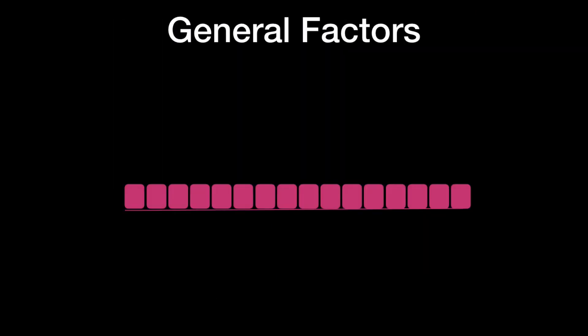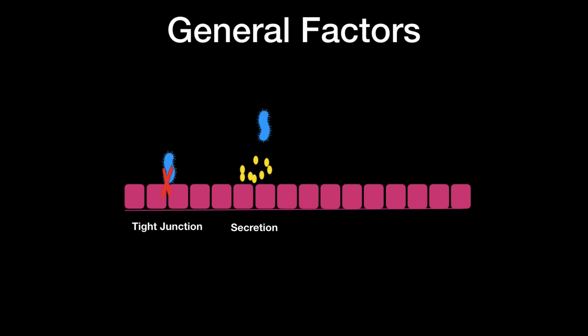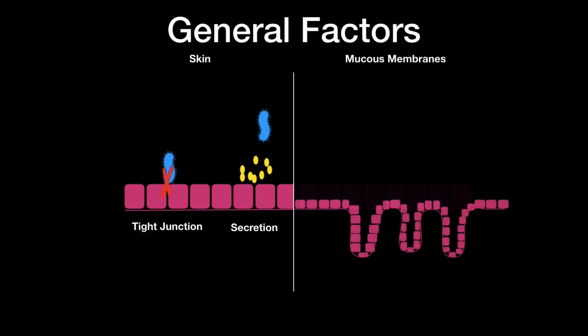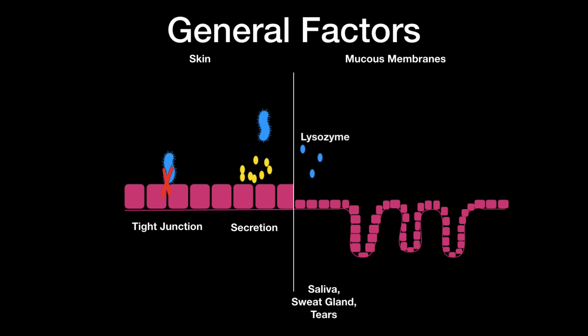Imagine these are your epithelial cells — let's say this is your skin, for example. The first mechanism includes a physical barrier where bacteria cannot really enter because of the tight junctions these cells have. Another mechanism is when the bacteria can't enter because of secreted products. In the saliva, sweat glands, and tears, we have something called lysozyme, which, once secreted out, breaks down the peptidoglycan layer of the bacterial cell wall.